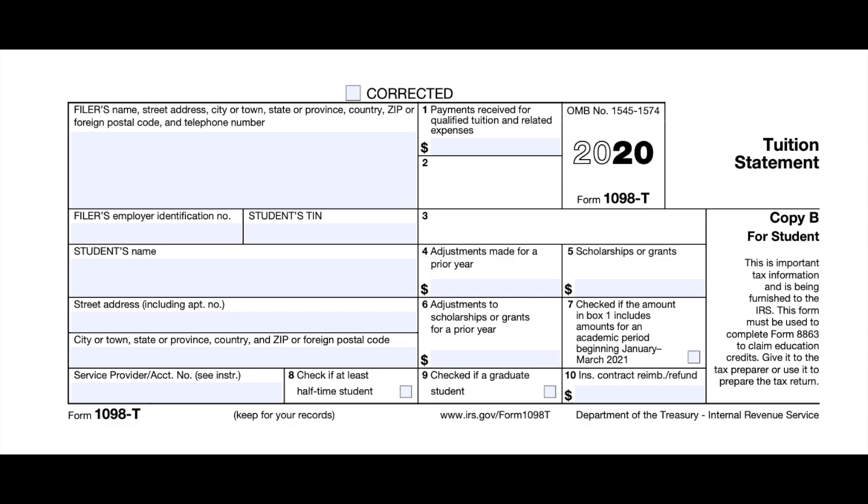So keep those phase-outs in mind when you are trying to calculate if you're eligible for this tax credit and how much you're going to receive. Another requirement that you need to keep in mind is you actually need to receive a 1098-T from your school. And I'll put that up on the screen really quick just so you can see what it looks like. Now this is the example one from the IRS but all schools, basically qualified higher education locations, will send you this document especially if you had out-of-pocket expenses.